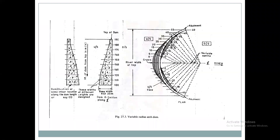The central angle of this arch is large. This is the image of a variable radius arch dam. Some of the dotted lines represent the variable radius and variable curves. Therefore it is also called a variable center arch dam.